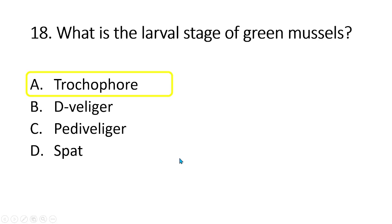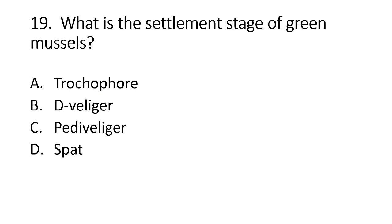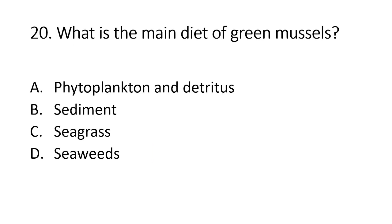Number 19. What is the settlement stage of green mussels? A. Trochophore. B. Veliger. C. Pediveliger. D. Spat. The answer is letter D. The settlement stage of green mussels is called spat. Number 20. What is the main diet of green mussels? A. Phytoplankton and detritus. B. Sediment. C. Seagrass. D. Seaweeds. The answer is letter A, green mussels mainly feed on detritus and phytoplankton.